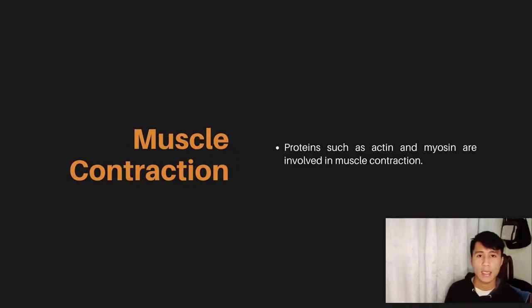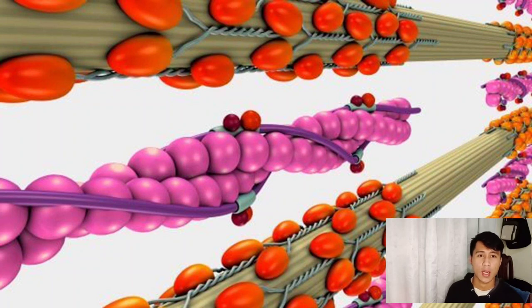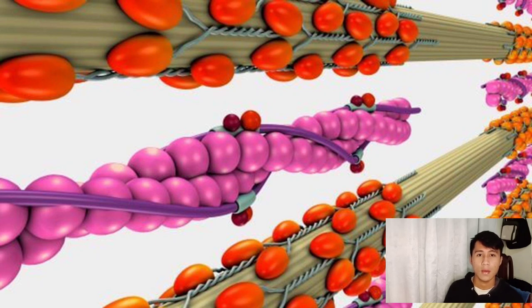Lastly, muscle contraction proteins such as actin and myosin are involved in muscle contraction. A simple example is a bicep curl where the bicep muscle contracts to lift a weight. The function of muscle contraction is to generate force to move bones and produce body movements, as well as maintaining posture and generating heat. These are just a few examples — the functions of proteins can vary greatly depending on their specific structure and role in the body. That's all, thank you.